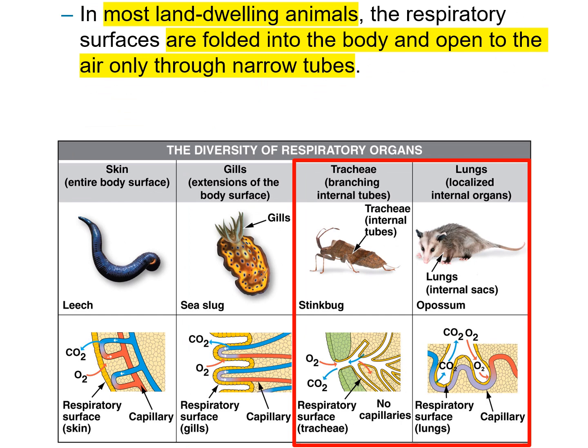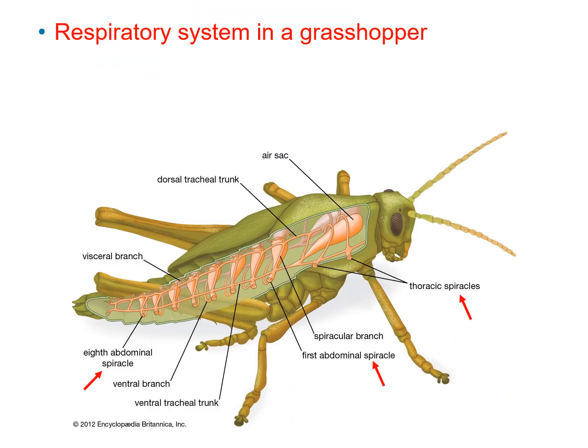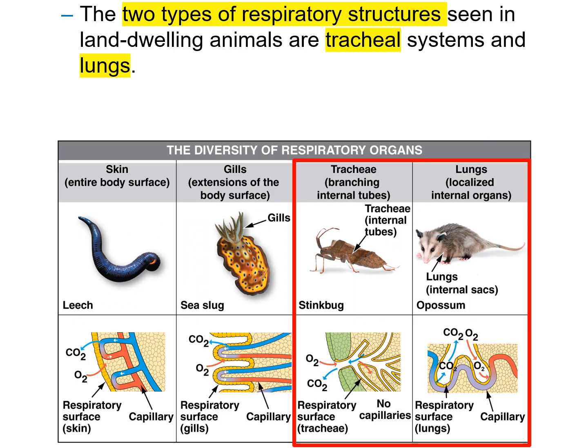In most land-dwelling animals, the respiratory surface is folded into the body and opens to the air only through narrow tubes. The tracheal system and the lung system are the ones found in land-dwelling animals. The two types of respiratory structures seen in land-dwelling animals are the tracheal system seen in insects and the lungs seen in mammals.